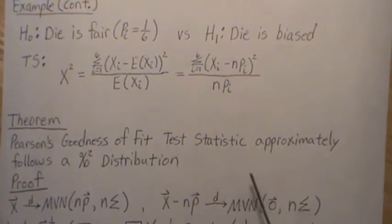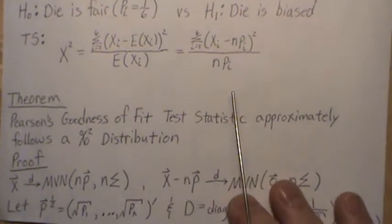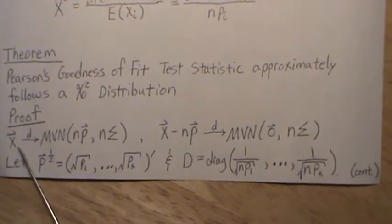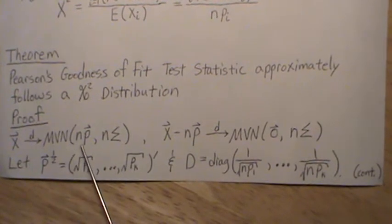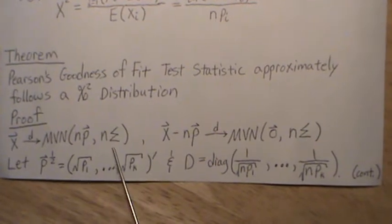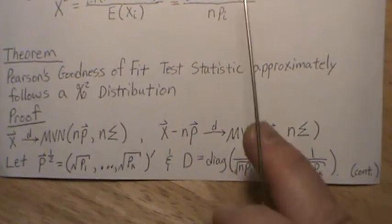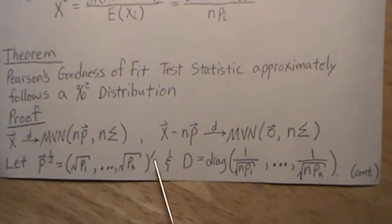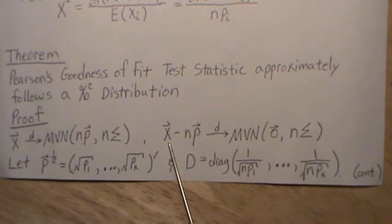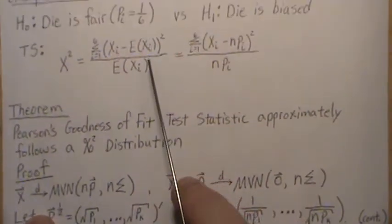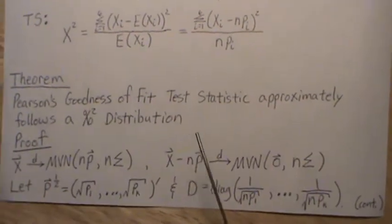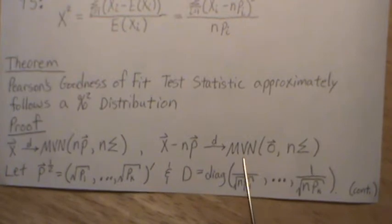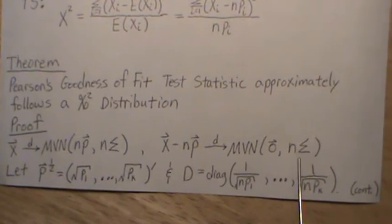We want to show that this follows a chi-square distribution. The theorem: Pearson's goodness of fit test statistic approximately follows the chi-square distribution. The proof begins: X, which follows the multinomial distribution, limits in distribution to a multivariate normal with mean NP and variance-covariance matrix n*Sigma. If we subtract the mean from our vector X — and we'll assume k categories generally — then (X minus NP) limits in distribution to a multivariate normal with mean zero and the same variance-covariance matrix.